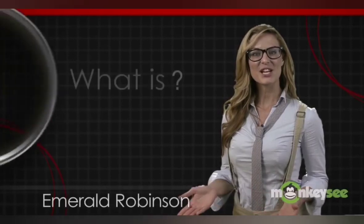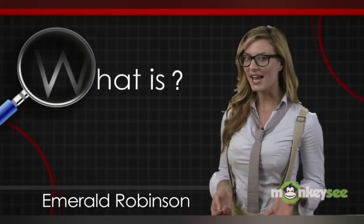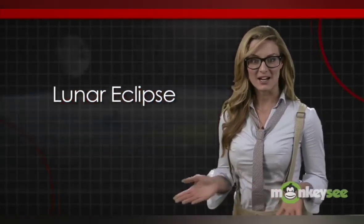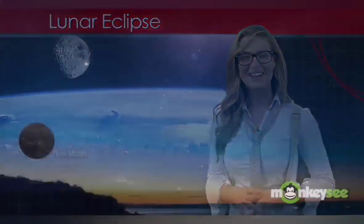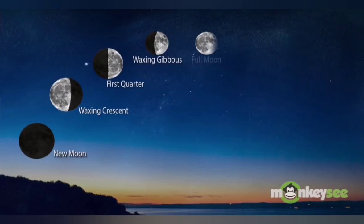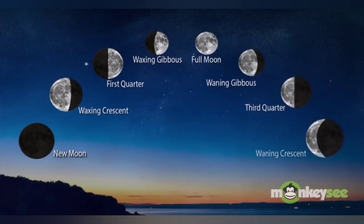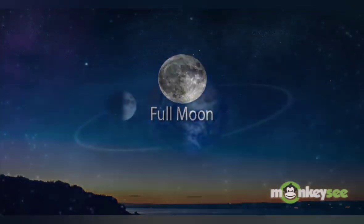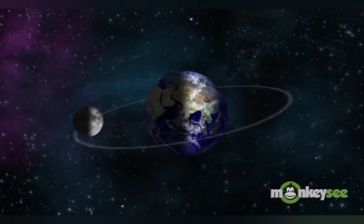In this video, we're going to take a closer look at an astronomical event called a Lunar Eclipse. To begin, it's important to understand the natural phases of the Moon as it revolves around the Earth. These Moon phases occur over the course of a month and are due to the Moon's relative location to the Sun. A Lunar Eclipse can only occur during a Full Moon, when it is opposite the Earth from the Sun and fully illuminated.